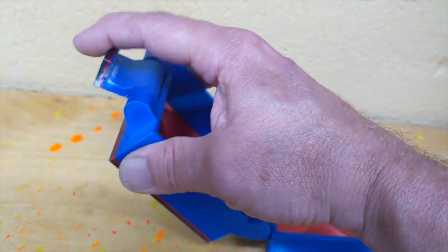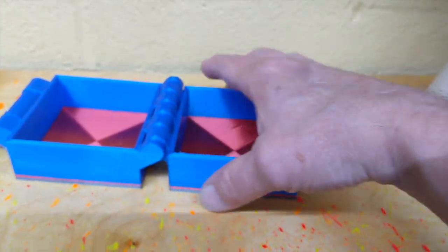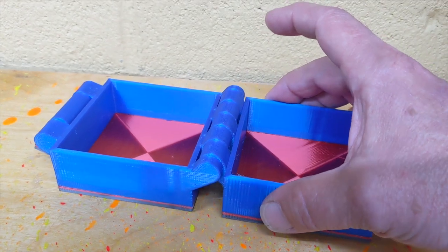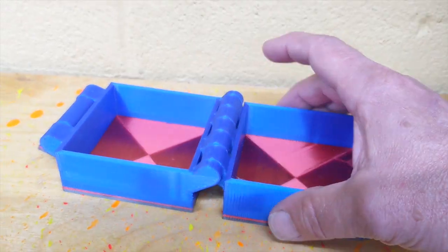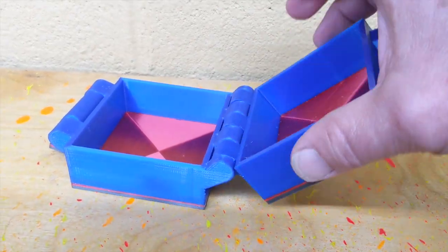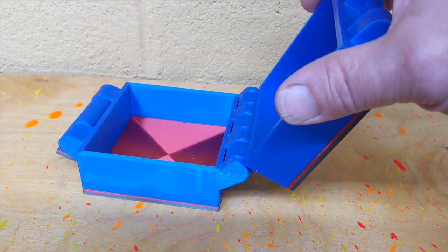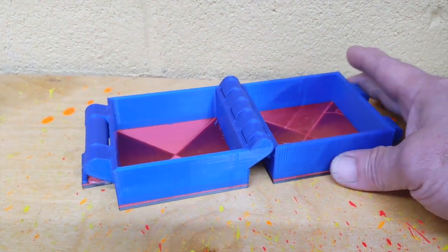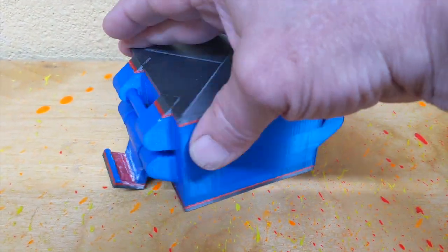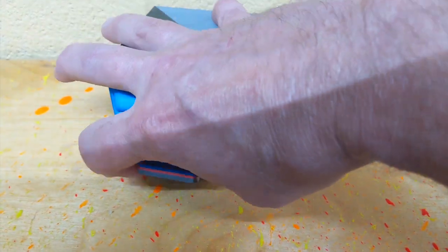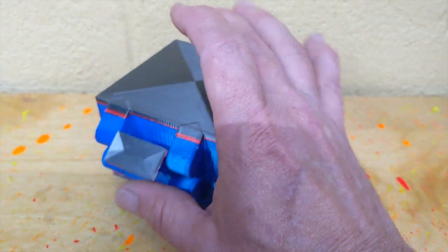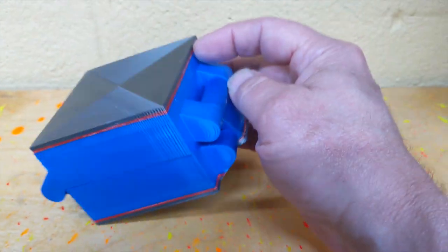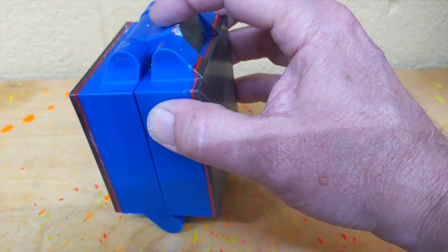But you can see how much play there is in that hinge, and that's why it can be printed in place with no problems. So when it closes, if you read the comments, you'll see that people complain about it not closing. And yeah, it would be cool if it latched in or clipped on or whatever.